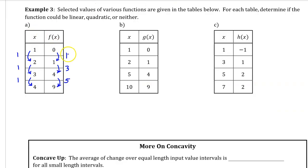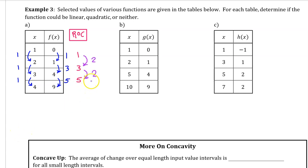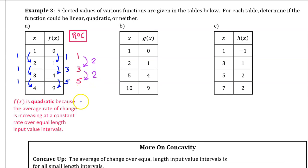For part a, here are the changes in output and here are the changes in input. Notice that we do have equal length input value intervals. The rates of change are 1, 3, and 5. We can already see that f of x is not linear because the rate of change is not constant. However, notice that the rate of change is increasing by 2 each time. f of x is quadratic because the average rate of change is increasing at a constant rate over equal length input value intervals. When you are asked to justify your answer, you have to say all of this.